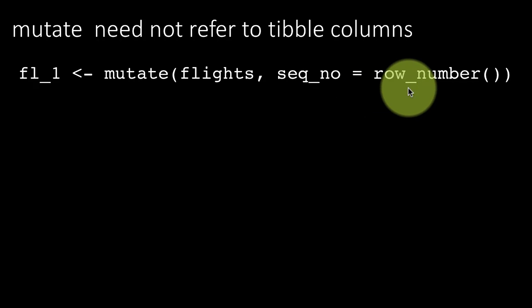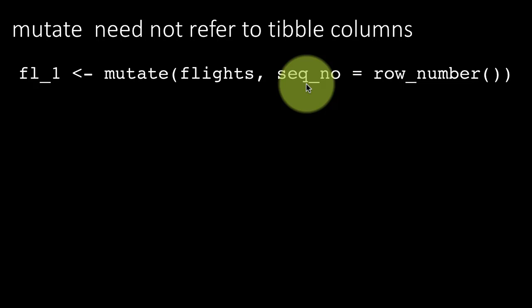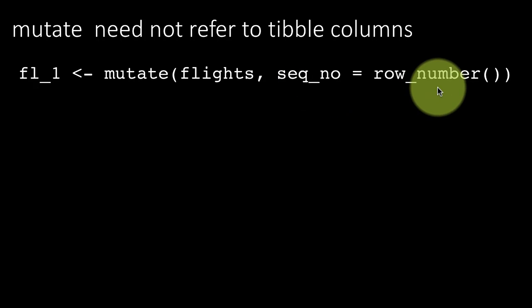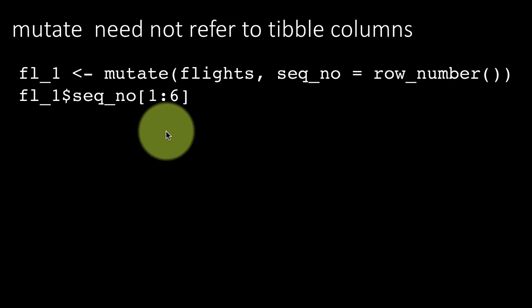And I'm using the function row_number to fill that particular column. So row_number obviously will be, for the first row it will be 1, for the second row it will be 2 and so on.